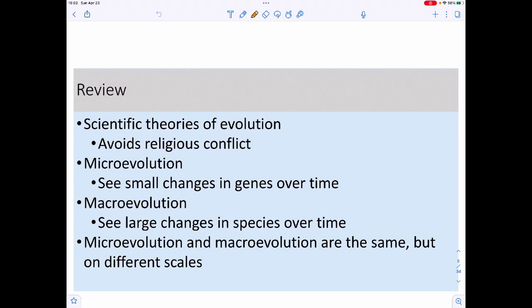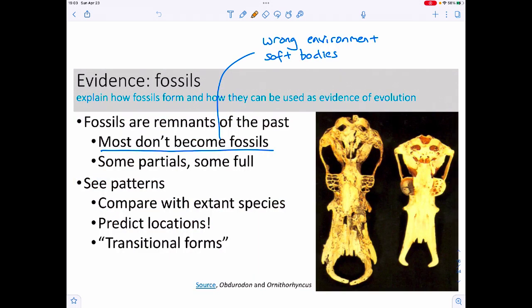Last time we looked at why there's a scientific theory for evolution and avoiding religious conflict. We also looked at two different aspects of evolution: microevolution and macroevolution, which both involve change over time. Microevolution is sometimes just referred to as natural selection, gene flow, or genetic drift, whereas macroevolution is sometimes referred to as speciation.